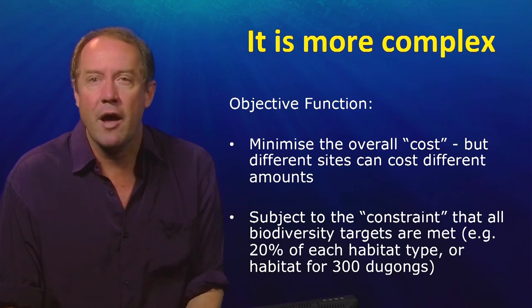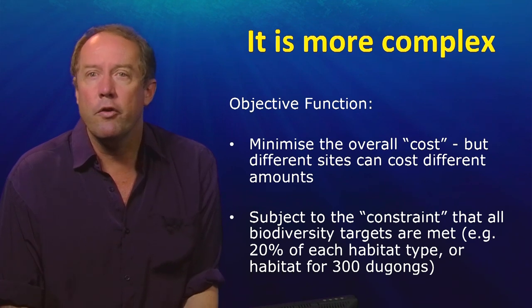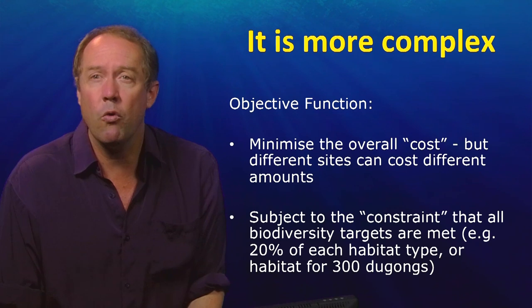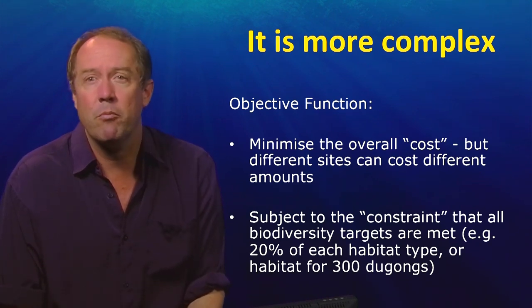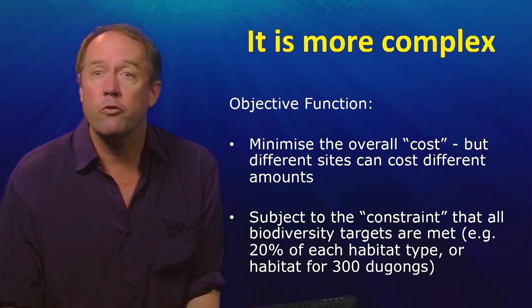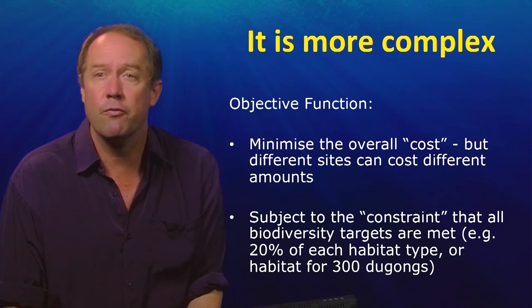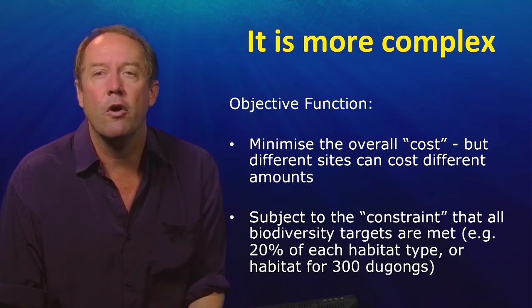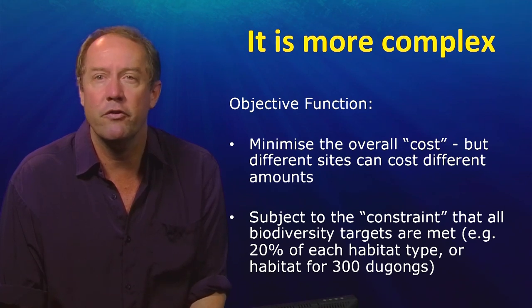In real world examples the objectives we're trying to achieve are much more complicated. For example, the cost of every site is going to be different, so we need to minimise that overall cost. Secondly, our constraints won't be just to get one example of every site — we might want 20% of a habitat type, or 300 individuals of a species like the dugong. So now our objectives are much more complicated, and the matrix isn't just zeros and ones — it's going to have a lot of other numbers in it.